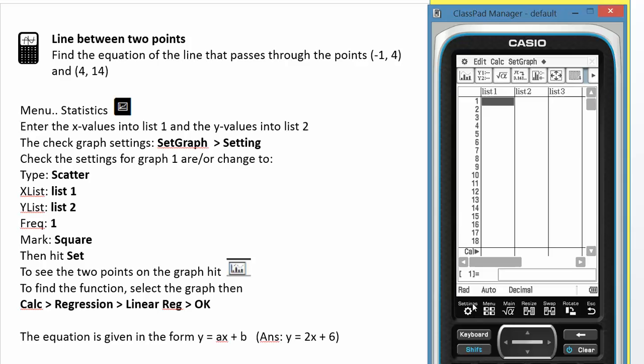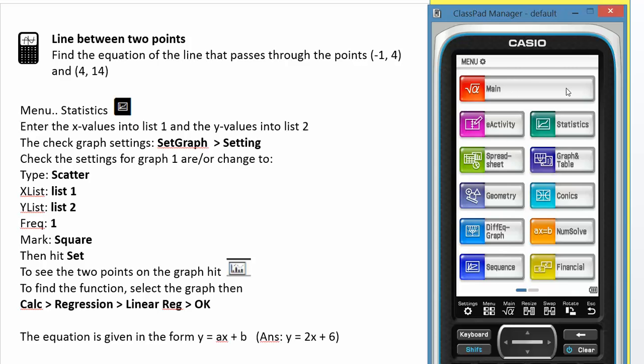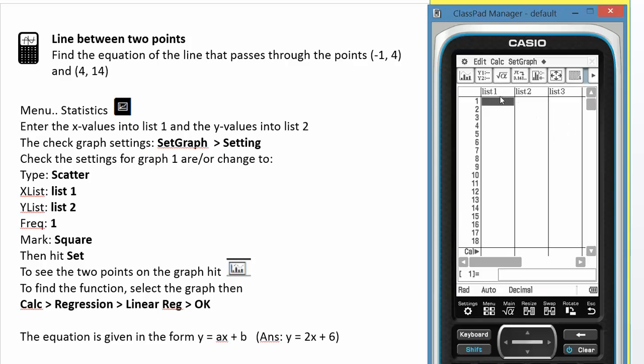Now what I've done here I've gone from the menu to statistics and enter the two points negative 1 for my two x values and for the y-pairing and 14 the y-pairing. So my points are negative 1, 4 and 4, 14.